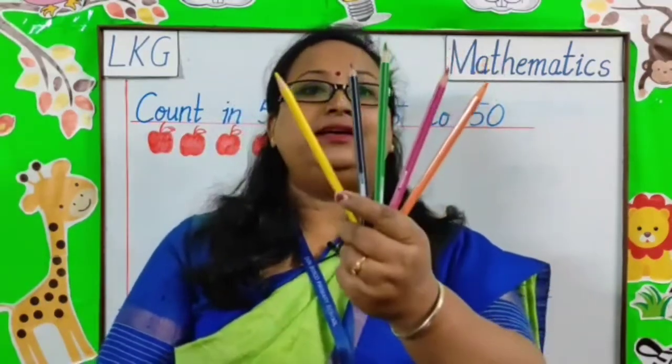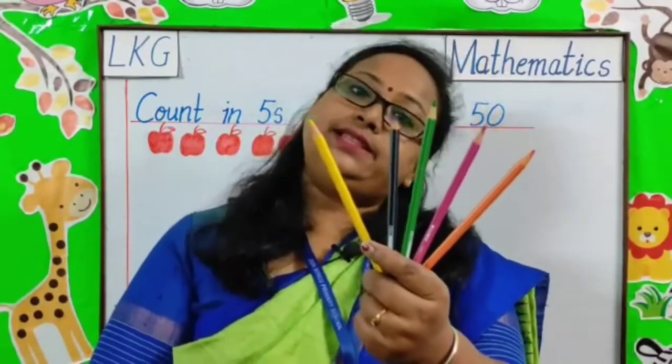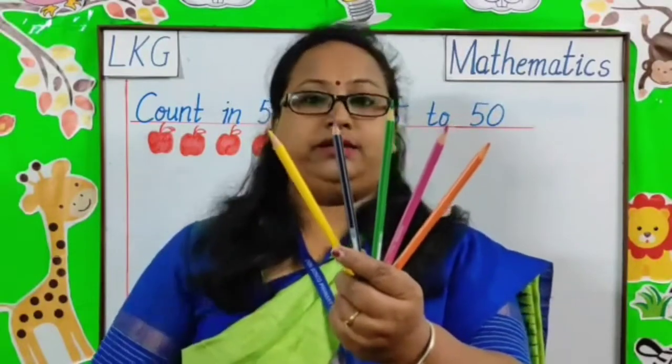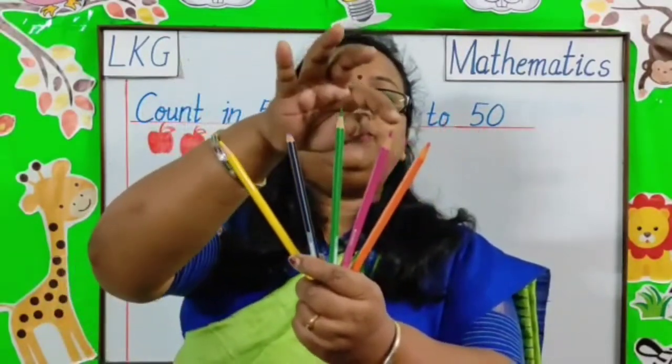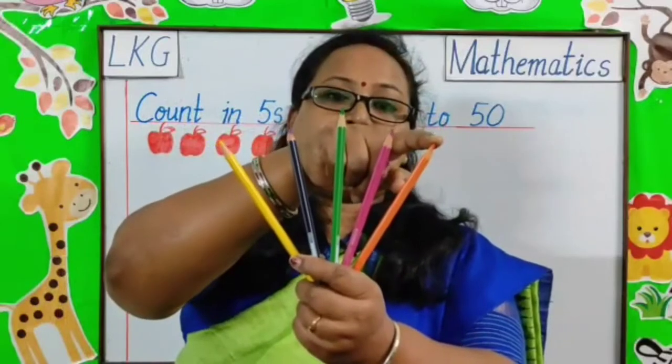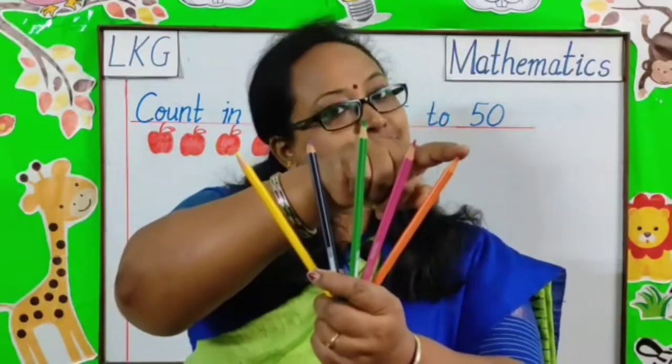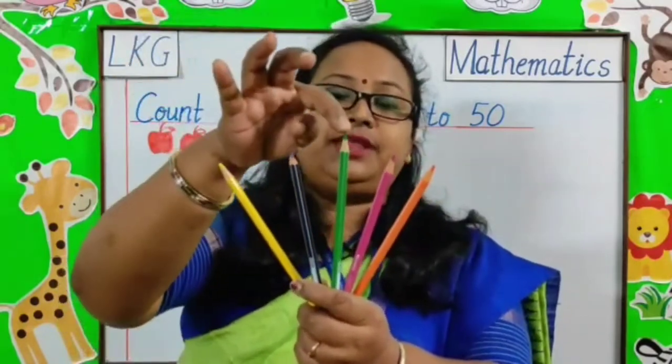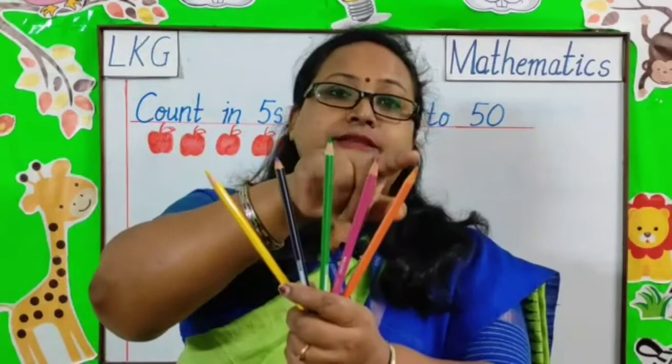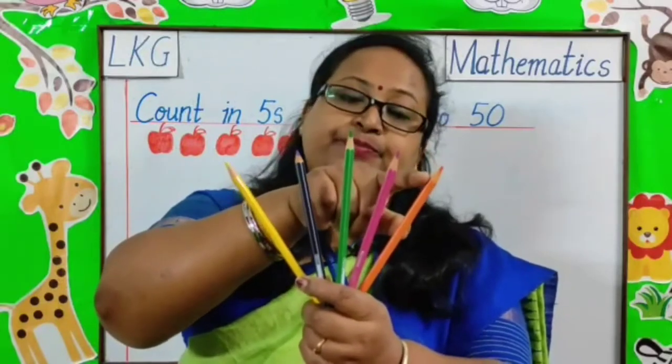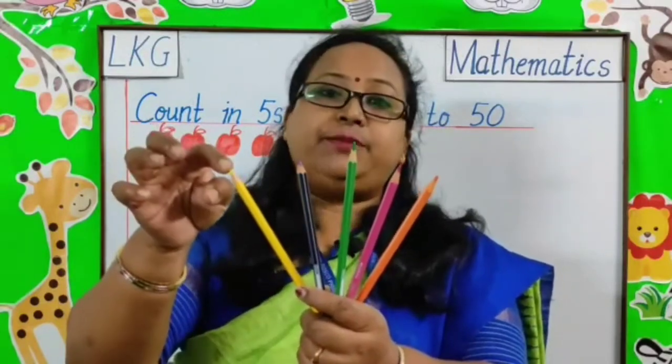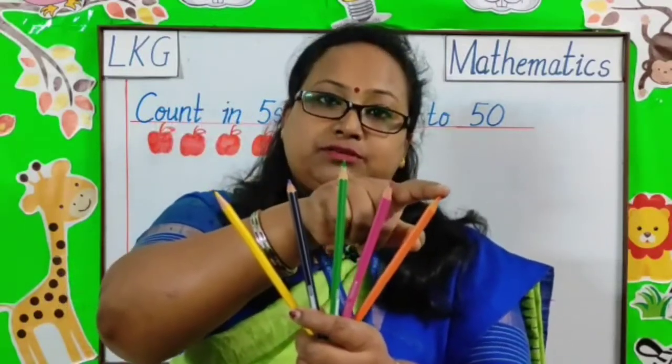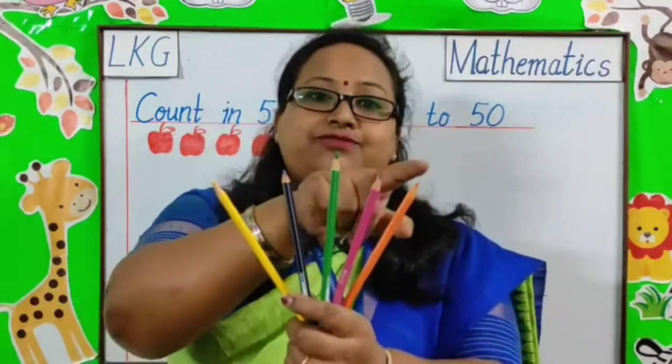Here are a few pencils in my hand. Let's count them. We will start from number 1. 1, 2, 3, 4, 5. So, our first answer is 5. After 5, 6, 7, 8, 9, 10. Next answer is 10. So, what we did children? We skipped four numbers and the fifth one is our answer.